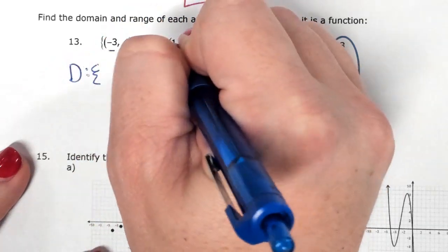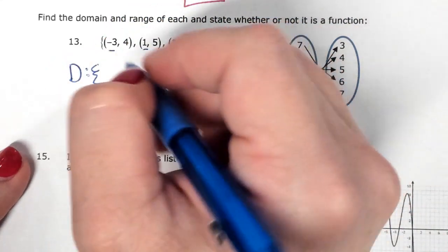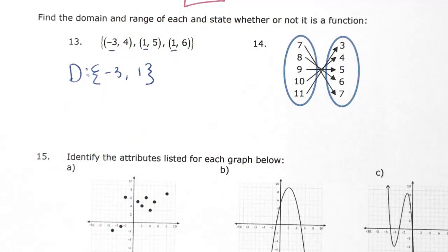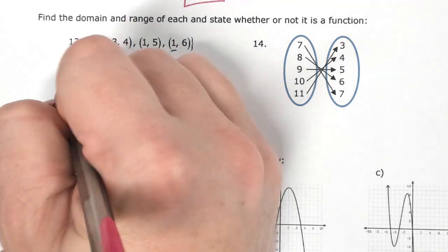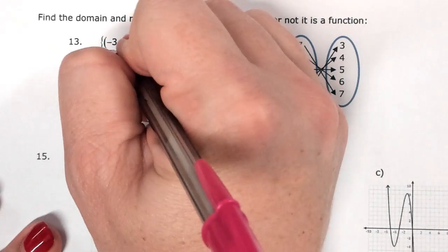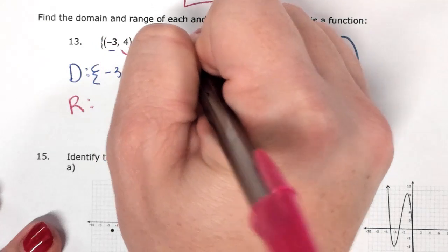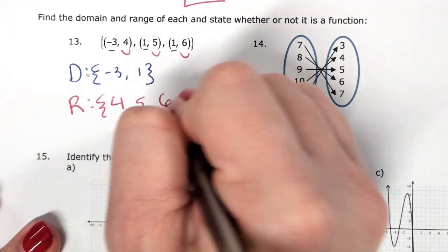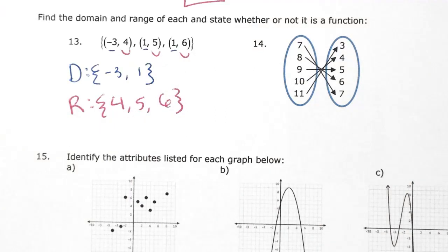So this is negative 3 and 1. Remember you don't have to repeat, so we don't have to write that one twice. And range is your y values, which are 4, 5, 6. And state whether it's a function or not. And this one is not a function because x had one twice.